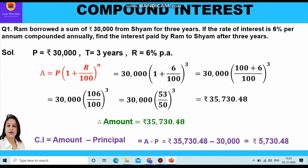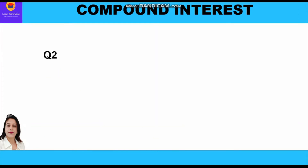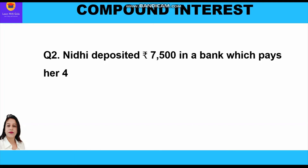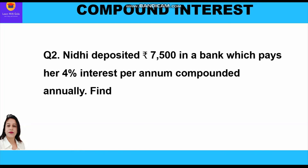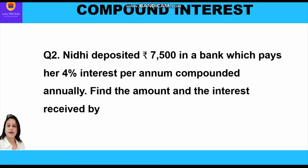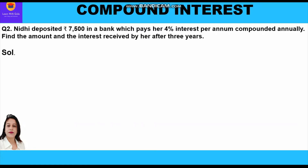Now let's take up question number two. Nidhi deposited rupees 7,500 in a bank which pays her 4 percent interest per annum compounded annually. Find the amount and the interest received by her after three years. So the principal is rupees 7,500, time period is three years, and the rate of interest is 4 percent per annum.